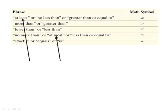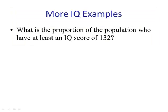Let's try some examples. What is the proportion of the population who have at least an IQ score of 132? The first thing that we need to realize is at least means greater than. So we draw our picture. The mean is 100. Here we have our x, 132, and at least means greater than.